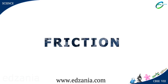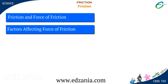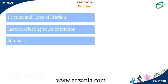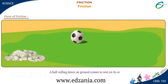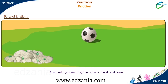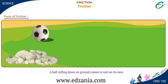Friction. Force of friction. Have you seen a rolling ball? A ball rolling down on ground comes to rest on its own — no one is applying a force to stop the motion. Can you identify the force? This unknown force is called friction. When an object moves over a surface, then due to contact between the surface and the object, the surface imparts a force on the object in a direction opposite to that of the moving object.